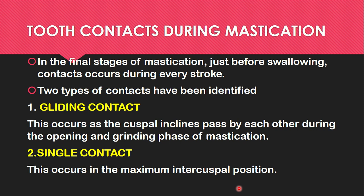Now we will discuss the contacts that occur during mastication. In the final stage of mastication, just before swallowing, contacts occur during every stroke. Two types of contacts have been identified: gliding contact and single contact. In gliding contact, the cuspal inclines pass by each other during the opening and gliding phase of mastication. Single contact occurs during the maximum intercuspal position.